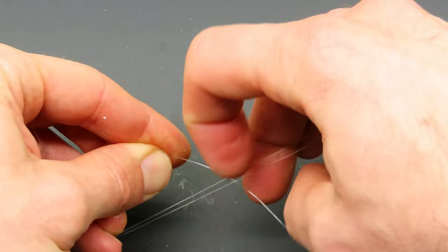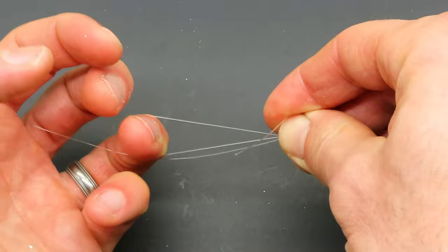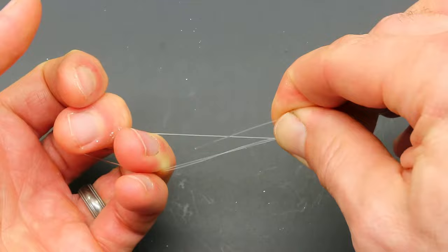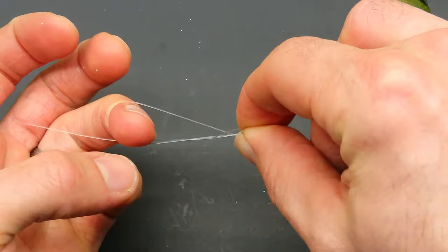Now you have this little loop here in addition to your main line. So your next step is to take this tag end and put it through the loop, pull it back towards you and repeat that. You're going to wrap through this loop seven times.